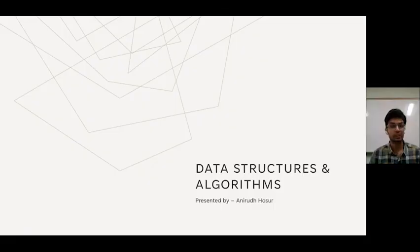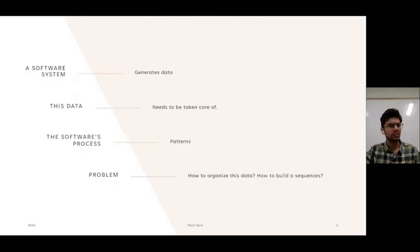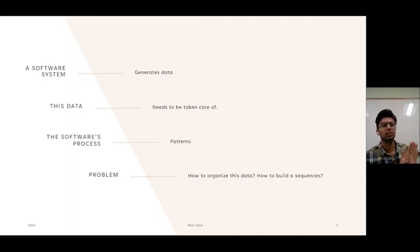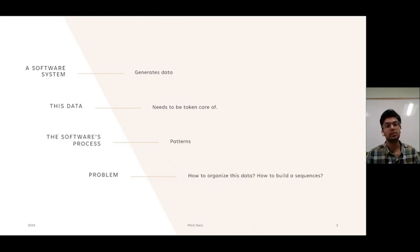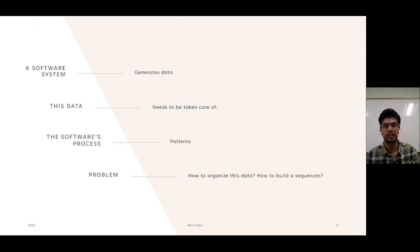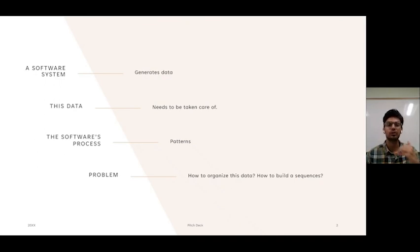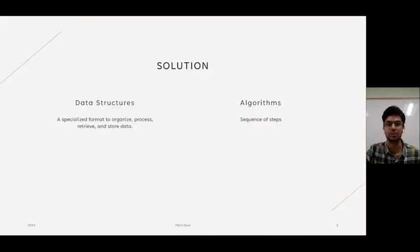Let me explain data structures and algorithms. Let's start with a simple software system like your mobile phone. This mobile phone generates a lot of data and this data needs to be taken care of. There are many processes on your phone — like opening an app, closing an app, installing, uninstalling an app — all these processes need to be addressed. How do these processes come together and allow you to do what you want to do? That's a problem we need to address, and the solution is data structures and algorithms.